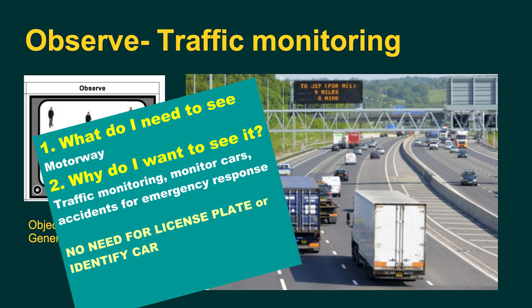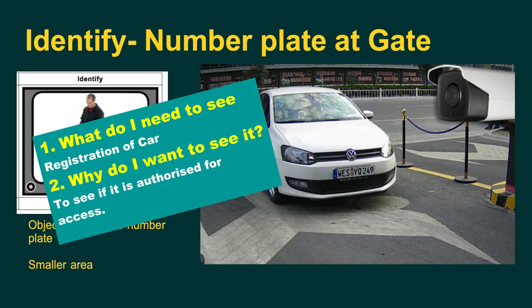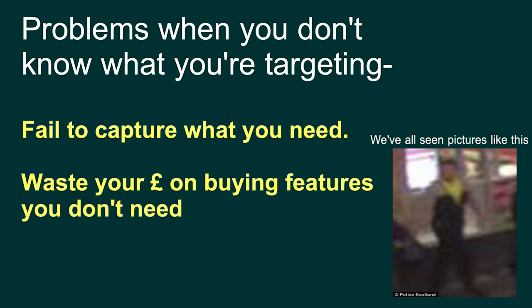Therefore there's no need to identify a number plate or the actual driver. Now take the example of a car at a barrier where the core principle is to identify rather than observe. What do I need to see? The registration of the car. Why? To see if it has authorized access through the gates. Therefore the camera must be positioned to identify the number plate, and deciding on lens types and camera placement becomes the next challenge.